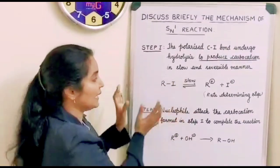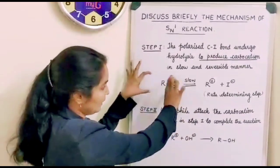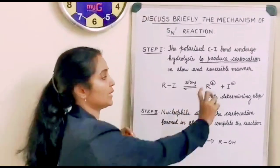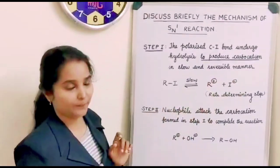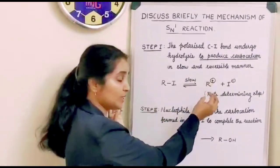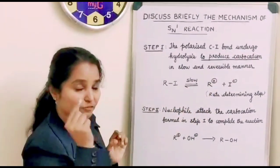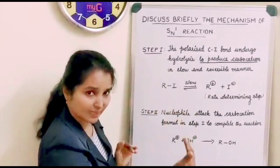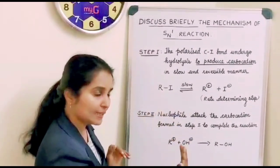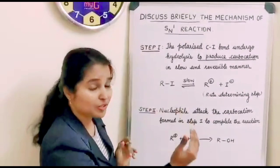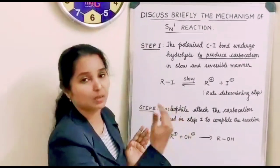So this alkyl halide will be decomposed to form carbocation and iodide ion. And this carbocation, according to its stability, what you have to keep in mind is primary cation is less stable than secondary cation. Secondary cation is less stable than tertiary carbocation. That means tertiary carbocation is the most stable form.